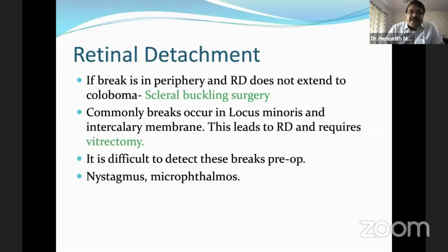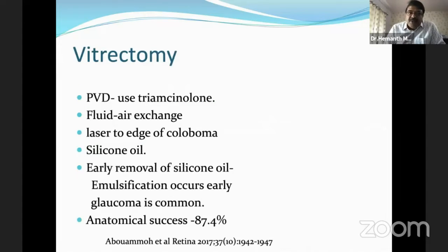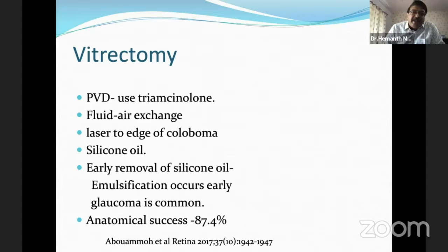It is difficult to detect breaks preoperatively, so be ready that you may not see them. There are standard ways of doing it that work well. You need to identify the vitreous — use triamcinolone, as there will often be abnormal membranes causing adhesions. Once you clear the vitreous adequately and perform a fluid-air exchange, because the break is within the coloboma, you will be able to drain the subretinal fluid completely. Once you reattach the retina, do laser to the edge of the coloboma and then apply a tamponade.